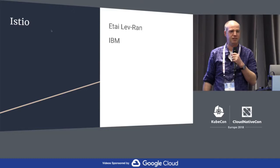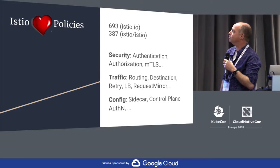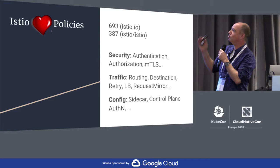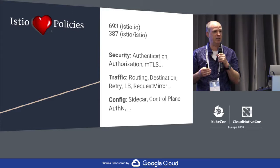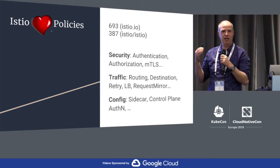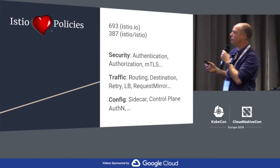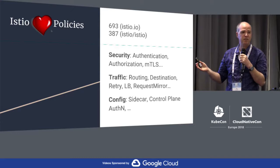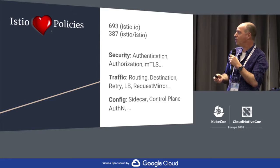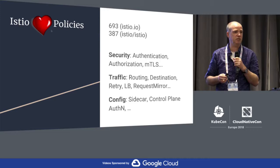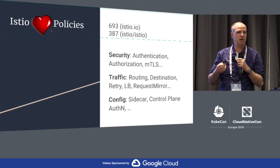I'm Itai, I work for IBM in the research lab in Haifa. I want to talk about Istio policies. We really like policies — we mentioned the word policy or policies almost 700 times on our website and almost 400 times in the code. Basically, if there's a function that the service mesh does for you and you want to control it, we have a policy for it. There are policies around security like authentication policies, authorization policies, and mutual TLS policies. There are policies around traffic shifting, quotas, and configuring your mesh. I want to focus on authorization policies to give you an idea of what we have today.